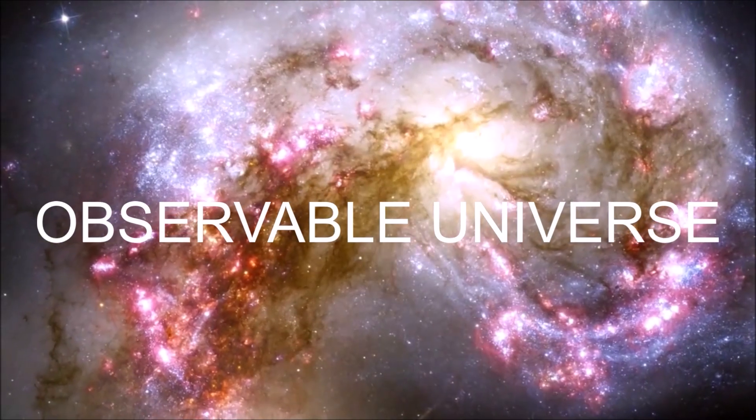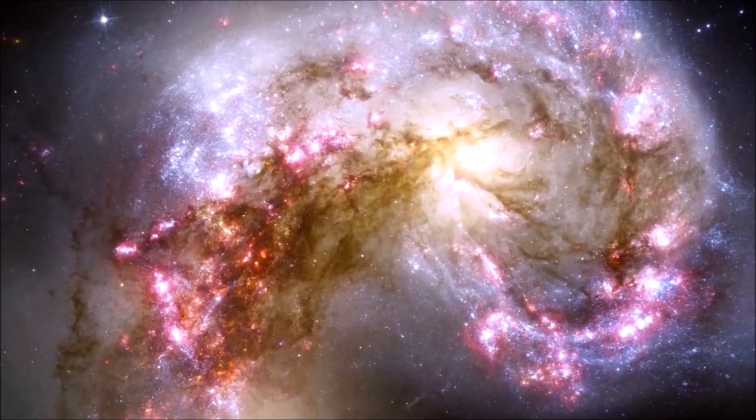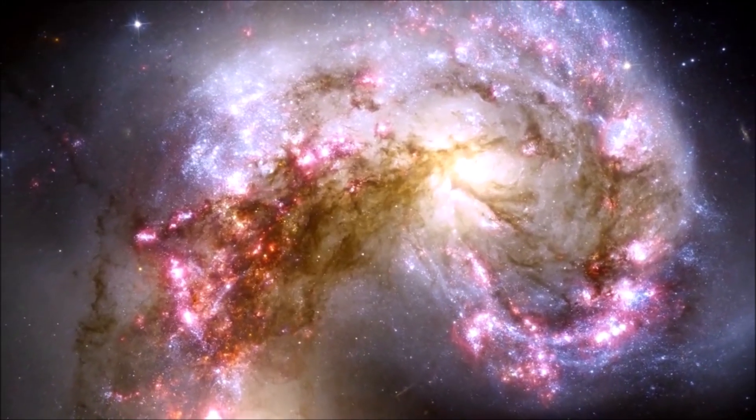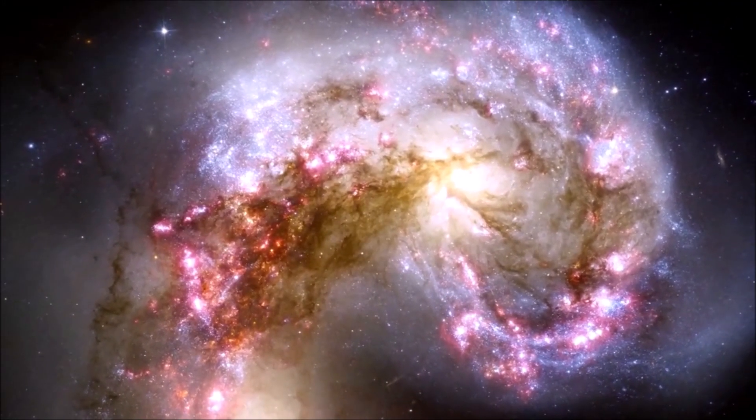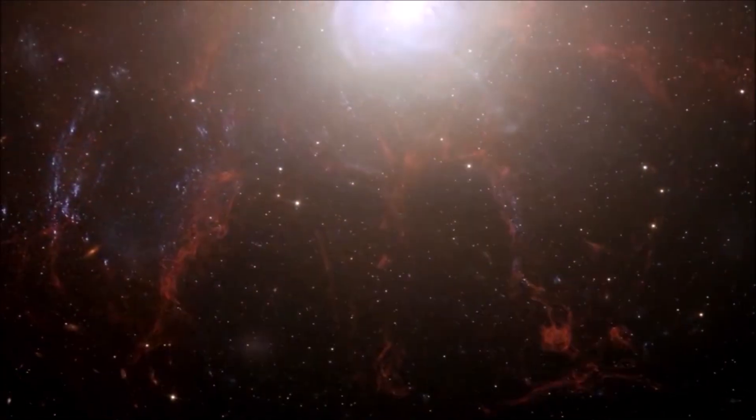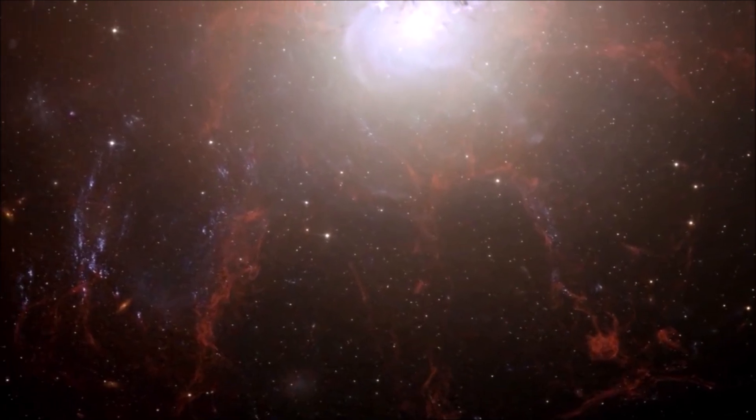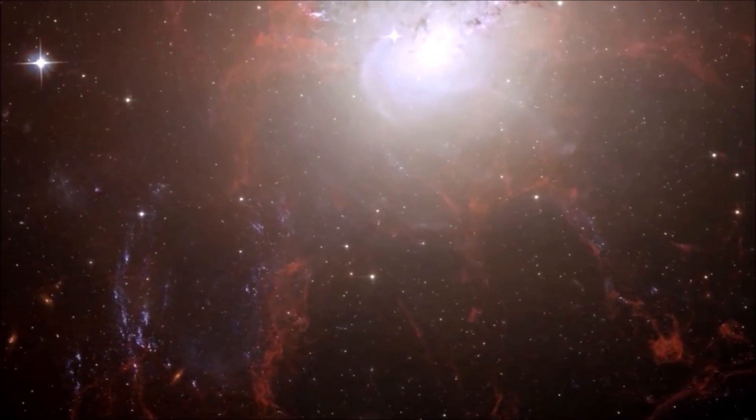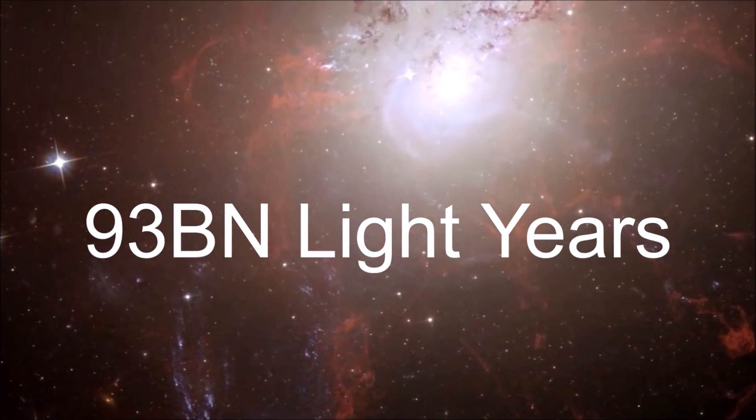Even if the universe was expanding at the speed of light, the observable universe should only have a maximum diameter of just under 28 billion light years based on its age. And yet, given our estimations of redshift, it seems as if our own observable universe is as voluminous as to be over three times that size at around 93 billion light years in diameter.